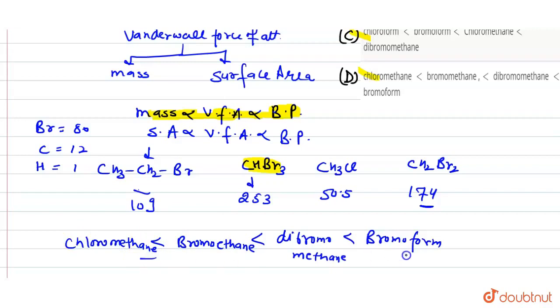The most important one is the bromoform, then dibromomethane, then bromomethane, and then chloromethane. Option D is correct. Thank you.